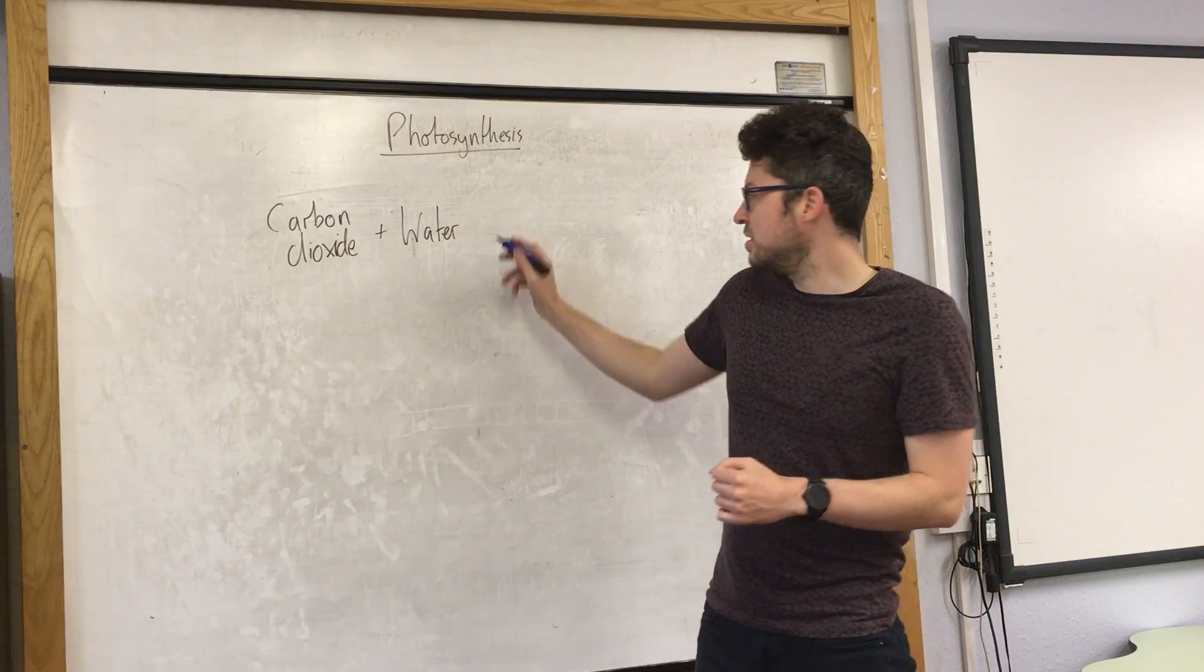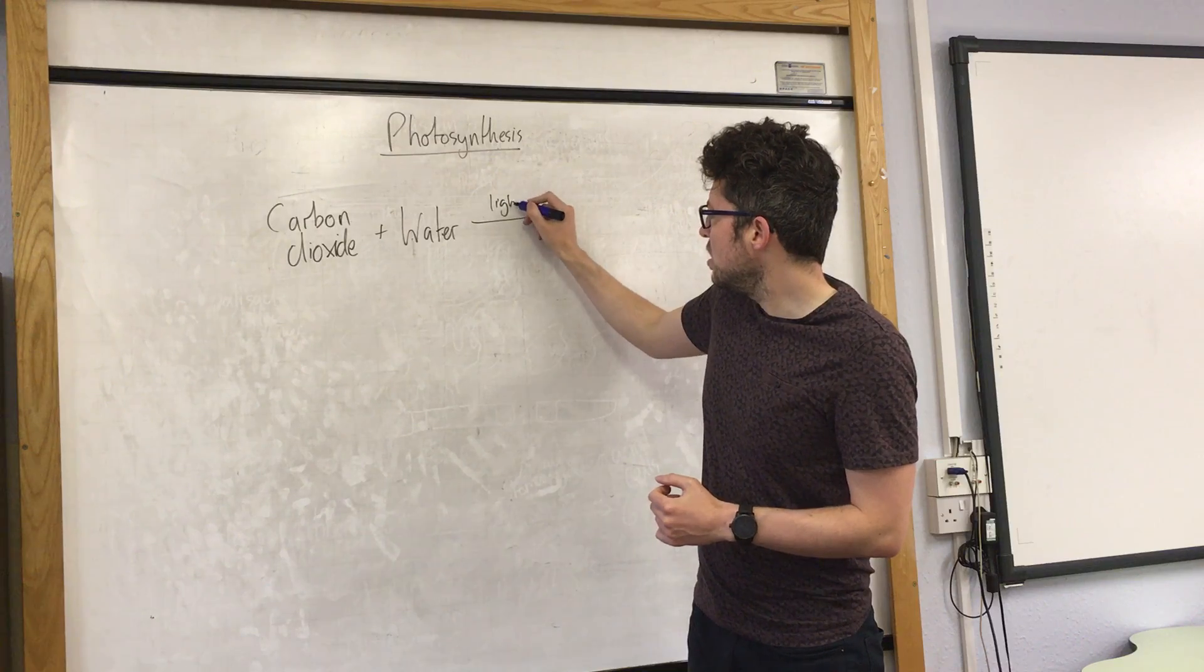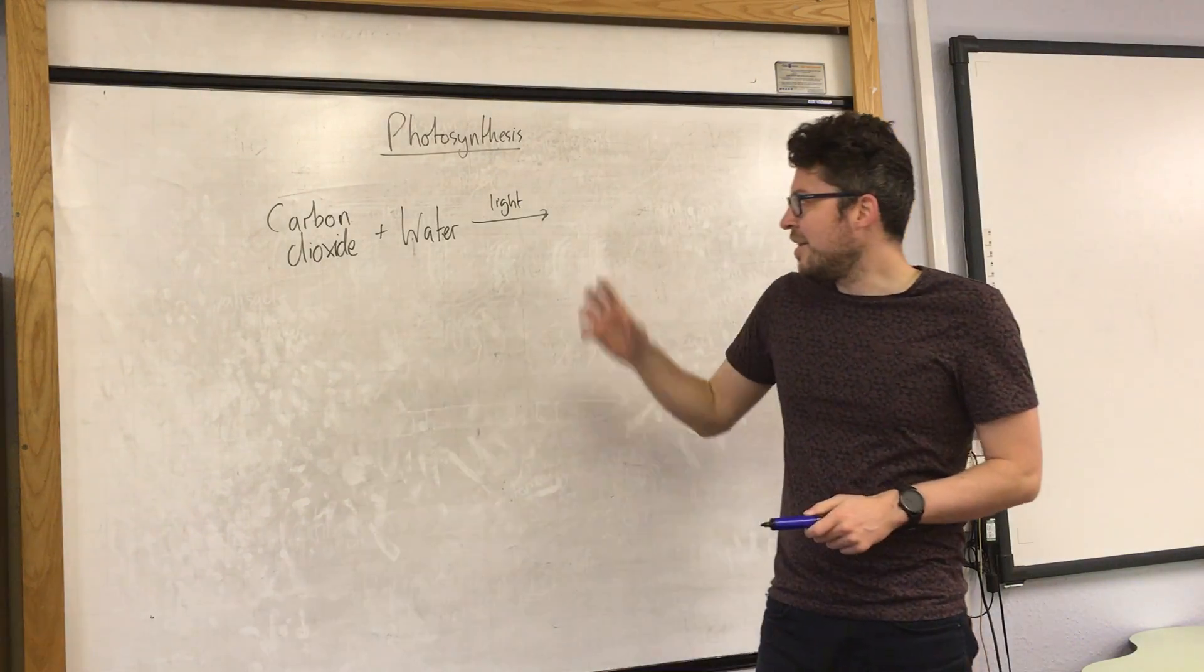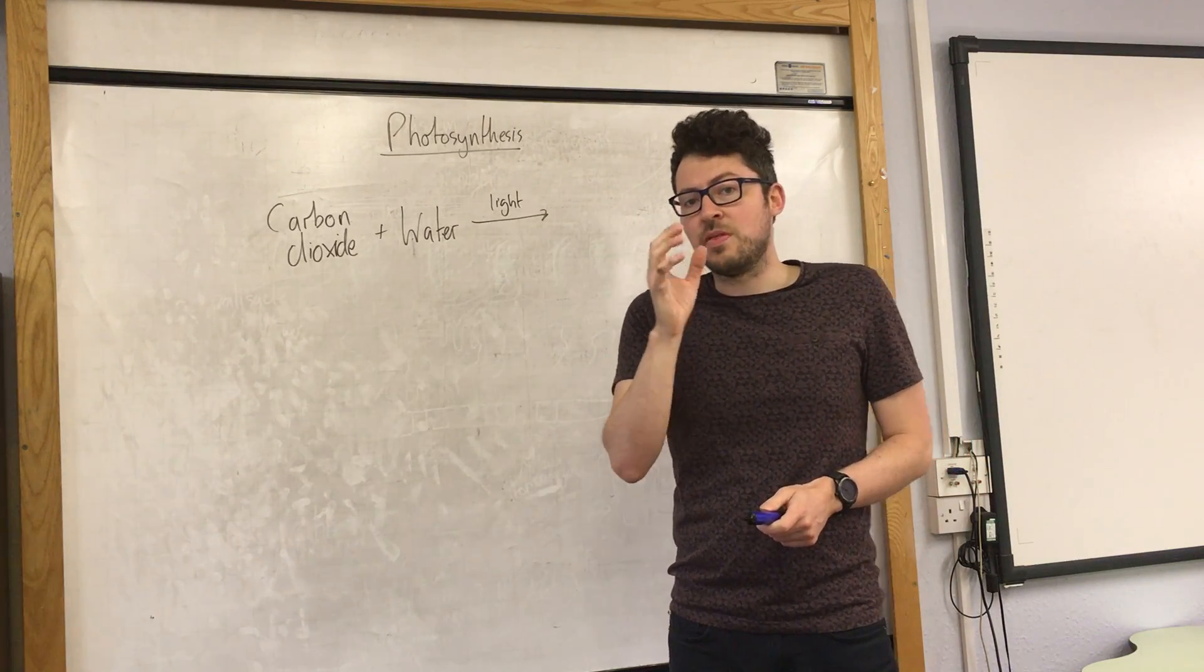These are the reactants. In addition to this, the plant needs light energy - this reaction cannot occur without it. The light is absorbed by chlorophyll within the chloroplasts of the leaf cells.